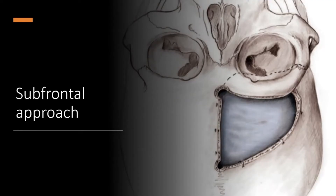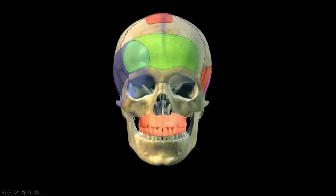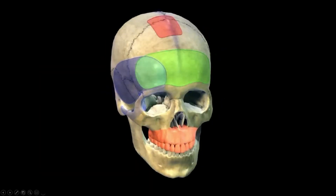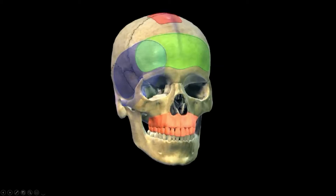Let's talk about the subfrontal approach, which is fairly simple compared to other approaches. Previously I used to do more bifrontal, but now I mostly do unifrontal as much as I can. The advantage of the unifrontal subfrontal approach is that I don't invade the frontal sinus, so I don't have to do any reconstruction, cranialization, or ceiling on the frontal side — I keep myself lateral to it as much as I can.